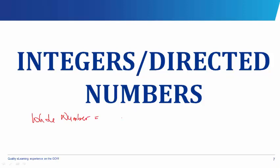Before now, we already know about fractions, and in a previous chapter we looked at decimals. Apart from decimals — this is an example of a decimal — we also have numbers called fractions. An example of a fraction is one and a half, which is the same thing as 1.5. Integers are whole numbers; for example, 1, 10, 22, 25 — they are known as integers.